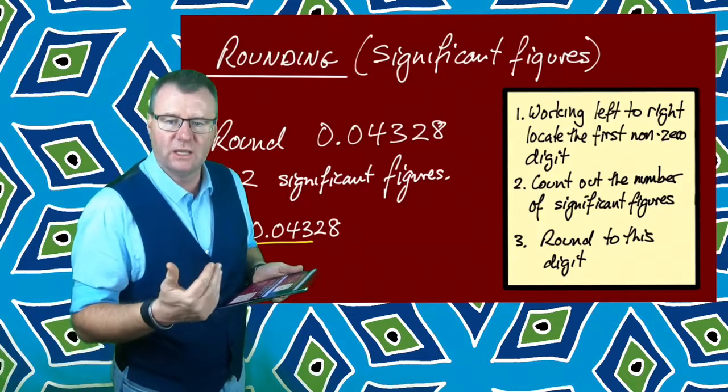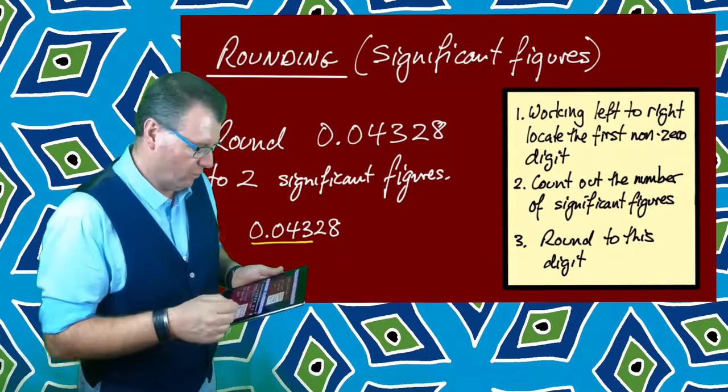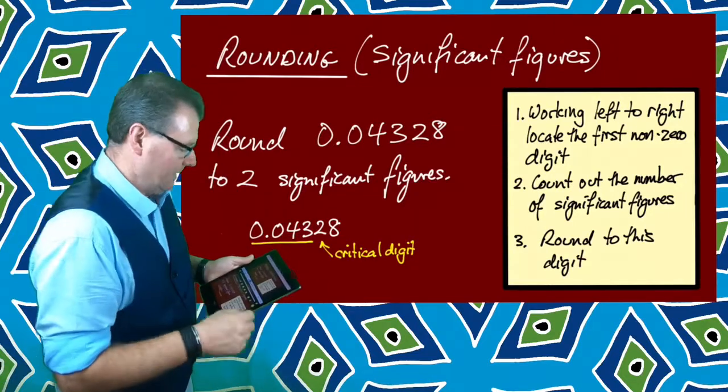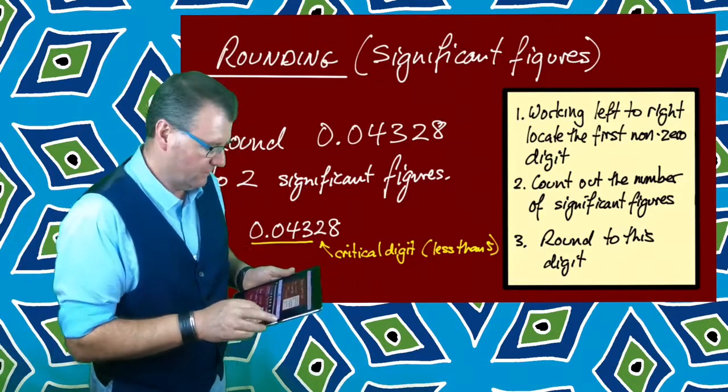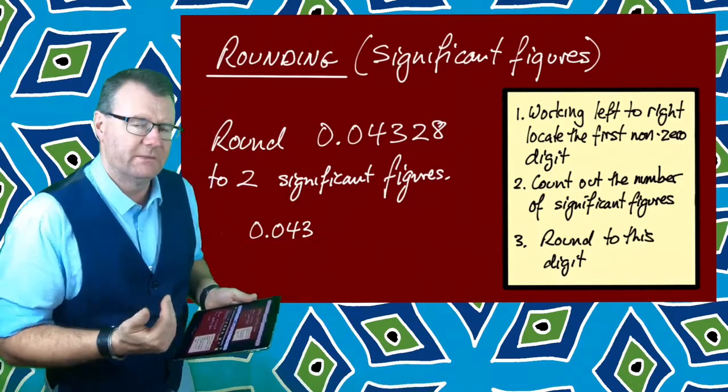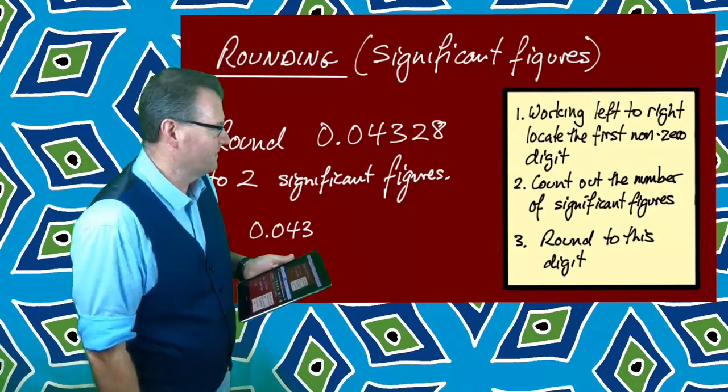Now all I've got to do is decide: do I leave it as 0.043 or round it up to 0.044? That's when I look at the next number, the critical digit. In this case it's not five or more, it's less than five. So I leave it as is at 0.043, rounded to two significant figures.